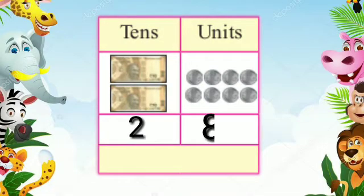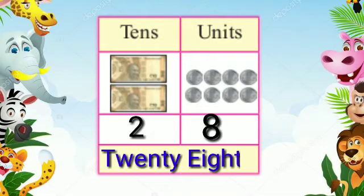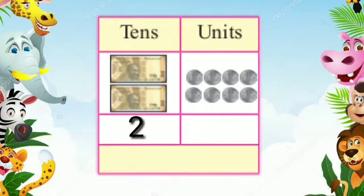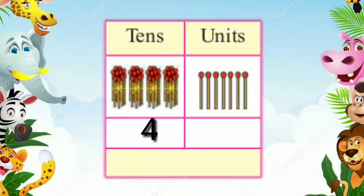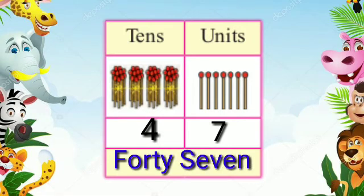2 tens, 8 units — 28. In words: t-w-e-n-t-y-e-i-g-h-t, 28. 4 tens, 7 units — 47. In words: f-o-r-t-y-s-e-v-e-n, 47.